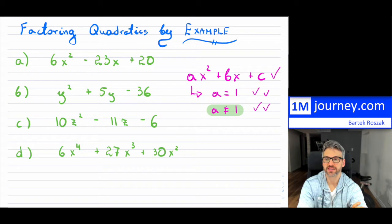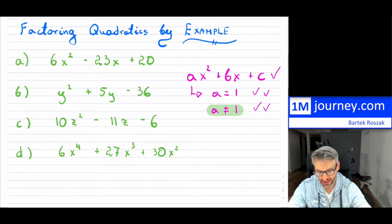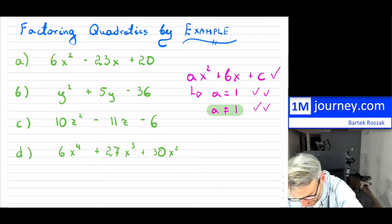First example, 6x squared minus 23x plus 20. When you're going to be trying to factor out any polynomials at all, one of the first steps you should try to do, it doesn't matter if it's quadratic or not, you should try to see if you can factor anything out to make these terms smaller.